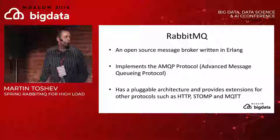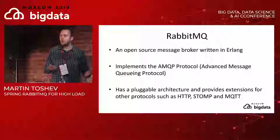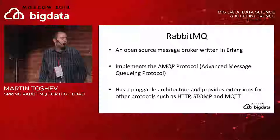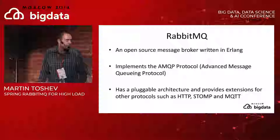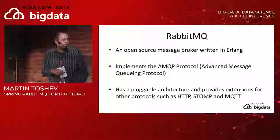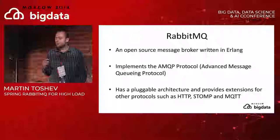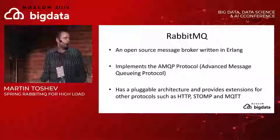RabbitMQ is an open-source message broker written in Erlang. One of the advantages of Erlang is that it's a message-passing language - unlike the JVM there is no locking; in the Erlang virtual machine all communication between processes happens via message passing, which makes it much easier to create distributed systems. The RabbitMQ broker implements the AMQP protocol - the Advanced Message Queuing Protocol - which is a general-purpose protocol. At present, RabbitMQ is the main implementation of this protocol.